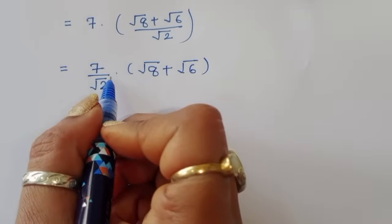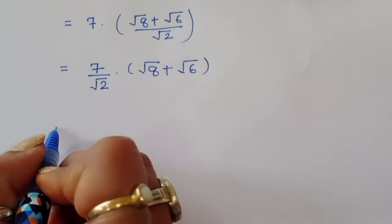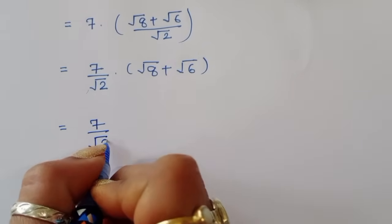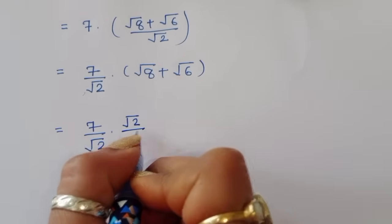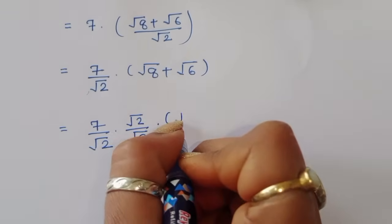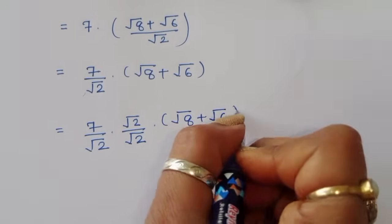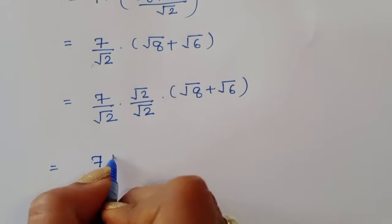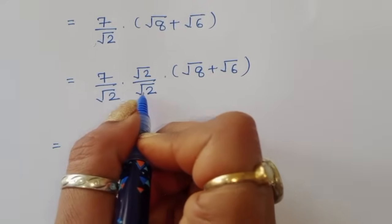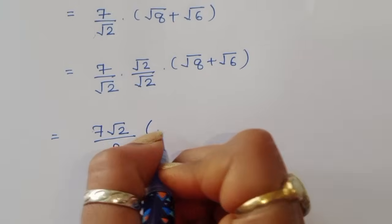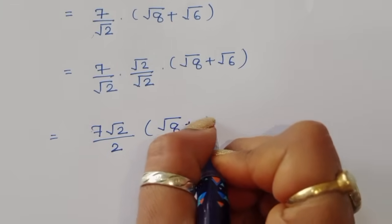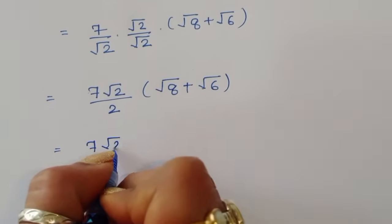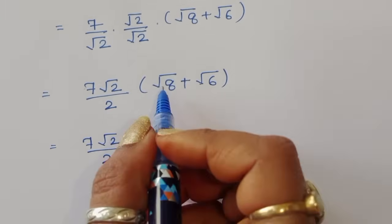Now this has square root of 2 in the denominator, so we have to rationalize. We multiply and divide by square root of 2. So we get 7 times square root of 2 divided by square root of 2 times square root of 2, times square root of 8 plus square root of 6. Square root of 2 times square root of 2 is 2, and square root of 2 times square root of 8 — since 2 times 8 is 16 — gives 4.